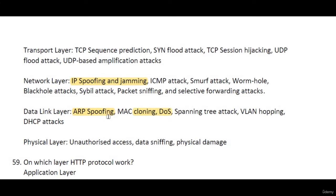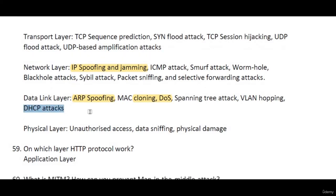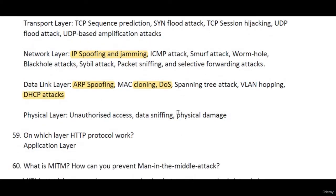ARP, or Address Resolution Protocol, is used for the mapping of MAC addresses and IP addresses. Spanning tree attacks, VLAN hopping, and DHCP attacks can happen at the Data Link layer. At the Physical layer, physical damage can happen and has been seen many times. Apart from that, data sniffing and unauthorized access can also occur at the Physical layer.